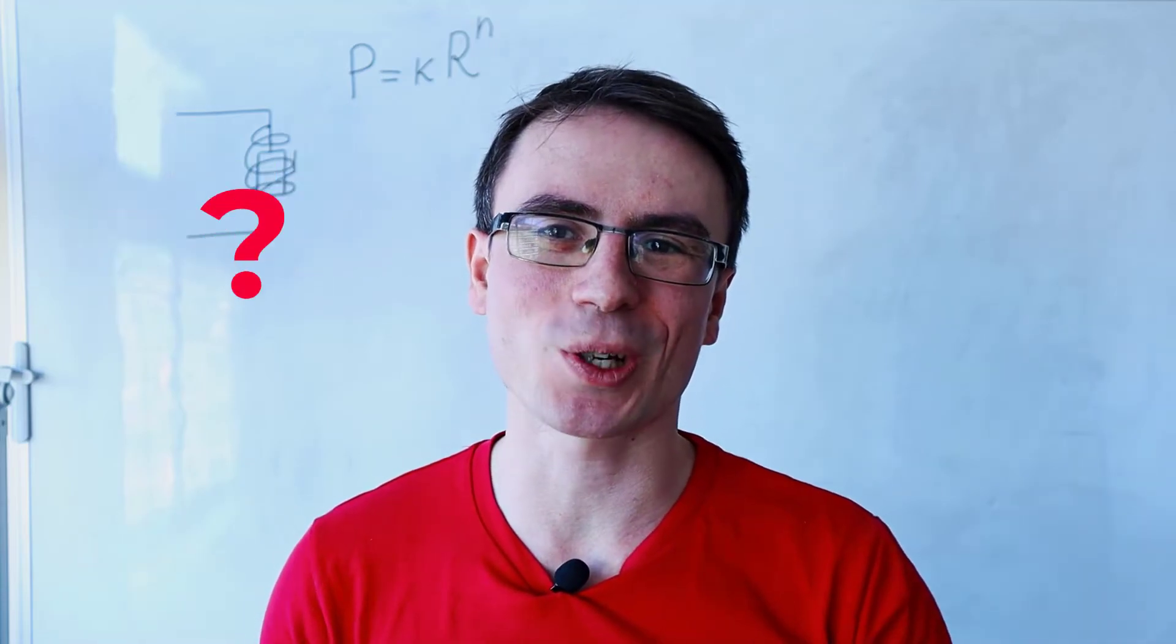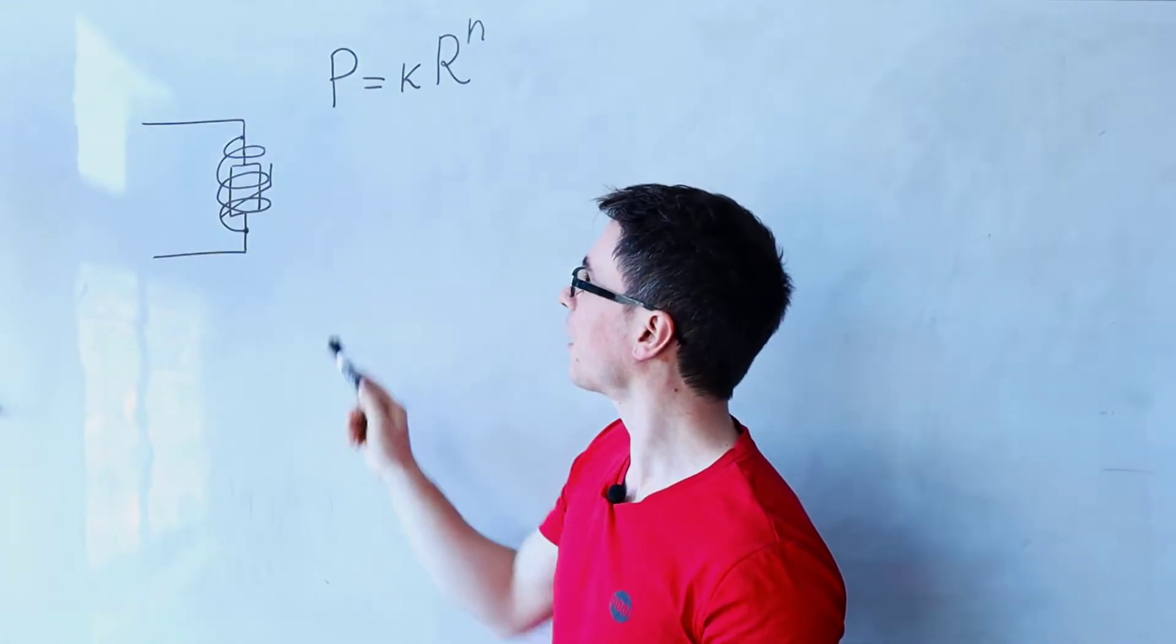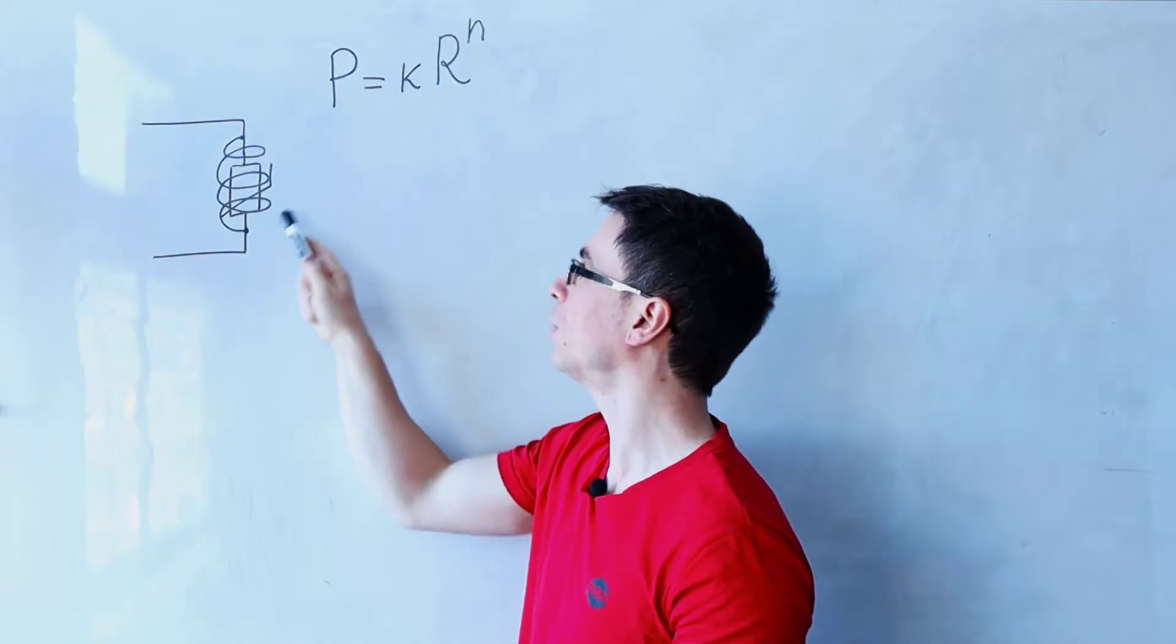Let's solve a tricky A-level physics question. We have a thermistor with a coil around it.